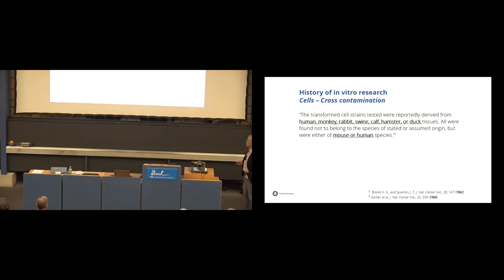And the cell contamination, and Amanda has already showed that it's not new. It is already known for a very long time. So, in 1962, Brent already showed that several human, monkey, rabbit, swine, calf, and whatever, tissues are actually either mouse or human species.